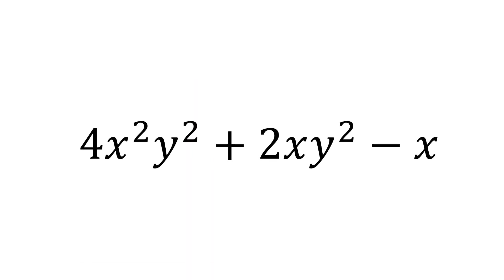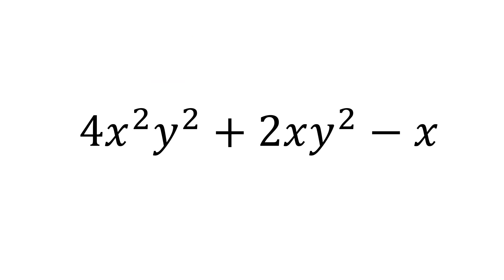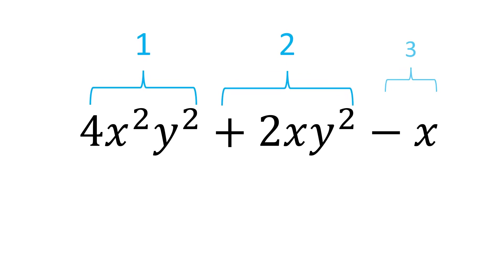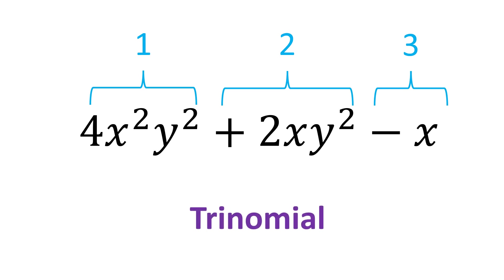4x squared y squared plus 2xy squared minus x is a polynomial, because it is a sum of 3 monomials. A special name for a polynomial with 3 monomials is trinomial.